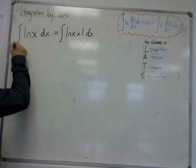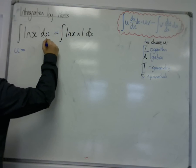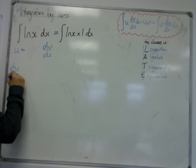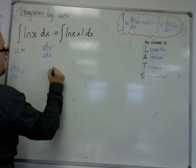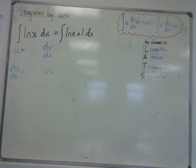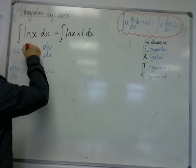So that when we're choosing our u and our dv by dx, we're looking down the list, and the first one we come across is the L, logarithm. So the logarithm, the log x, must be our u.